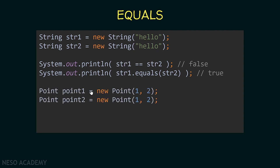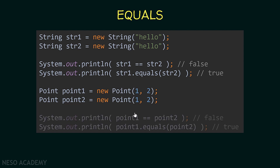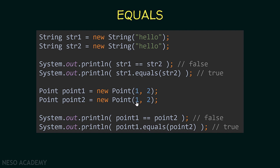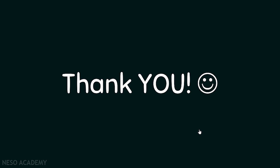Here we have two points, point1 and point2, each with its own address. But as you can see, they have the same abscissa and the same ordinate. Printing point1 == point2 displays false because each one has its own address. Then I'm using the equals method of point1 and comparing it with point2 — in this case we will see true printed, because the equals method compares the abscissa with the abscissa and the ordinate with the ordinate, and in this case they are equal. Thanks for watching, and I'll see you in the next video.